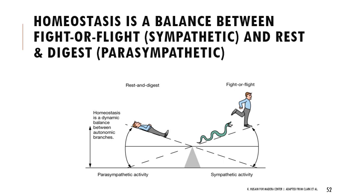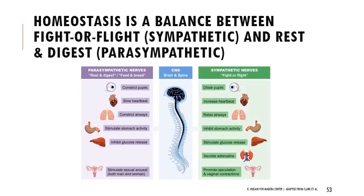With rest and digest - parasympathetic responses - your pupils constrict, you have a slower heartbeat, airways are constricted, stomach is really active, glucose is being stored as glycogen in your liver, and sexual arousal is stimulated. This is called 'feed and breed' - you're safe and can take care of base body functions. That's controlled by parasympathetic nerves.